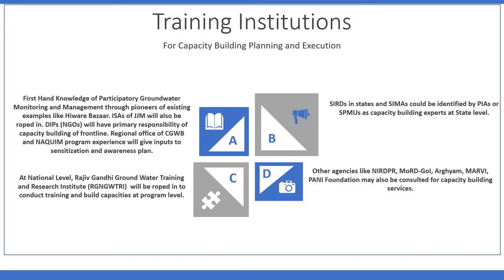Atal Bhujal Yojana has identified different national and state level government and non-government agencies to support training and capacity building in the program. Knowledge and experiences generated from successful models such as Hivri Bazar and Marvi already exist in the ecosystem and the program plans to leverage them. Using available and new training content, Central Groundwater Board and Rajiv Gandhi Institute will conduct national level training. The states can also identify agencies at state level for helping with capacity building operations in state, district and gram panchayats.